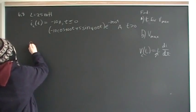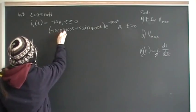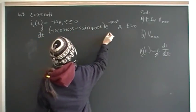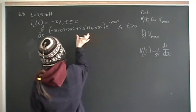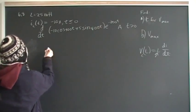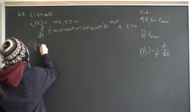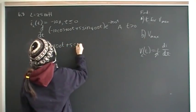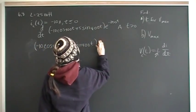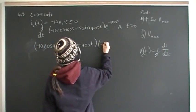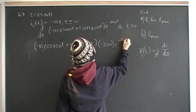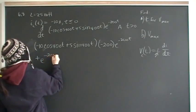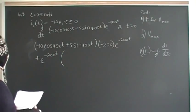To compute dI/dt, we take the derivative of the current expression. Using the product rule, that is: fix the first term (negative 10 cosine 400t plus 5 sine 400t) times the derivative of e to the minus 200t — which is negative 200 e to the minus 200t — plus fix the e to the minus 200t times the derivative of the trig expression inside.